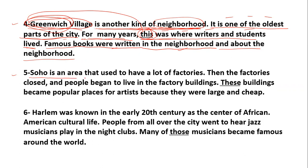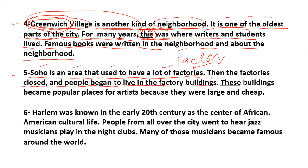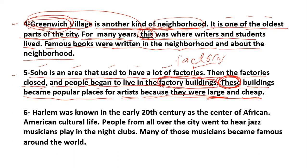Number Five. SoHo is an area that used to have a lot of factories, اسم علم, منطقة بها مصانع كثيرة — factory, مصنع, factories. Then the factories closed, المصانع أغلقت, and people began to live in the factory buildings, والناس بدأوا يعيشون في مباني المصانع. Those buildings became popular places, أصبحت أماكن عامة for artists, للفنانون, because they were large and cheap, لأنها كانت واسعة وكبيرة الحجم ورخيصة. Those buildings refers to the factory buildings, مباني المصانع.